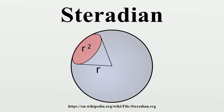The steradian, like the radian, is a dimensionless unit, essentially because a solid angle is the ratio between the area subtended and the square of its distance from the vertex. Both the numerator and denominator of this ratio have dimension length squared.